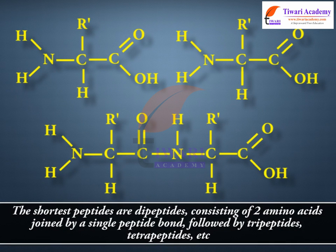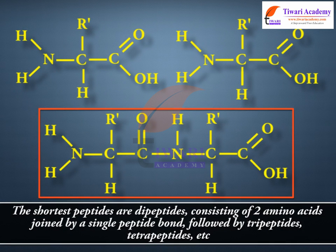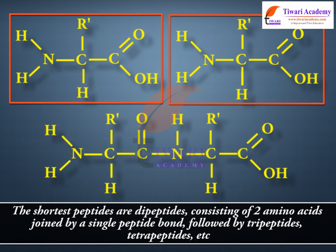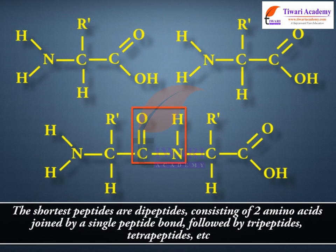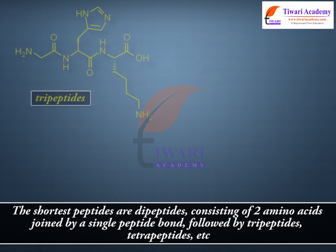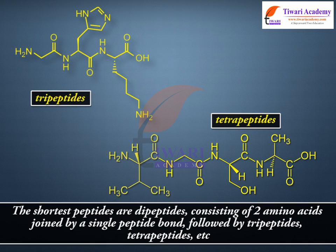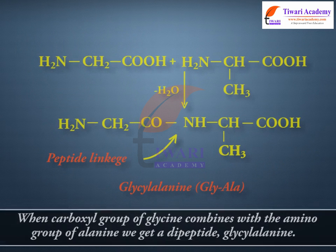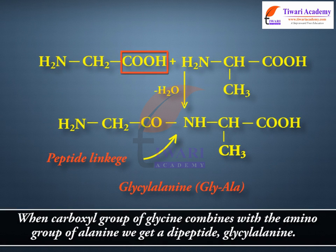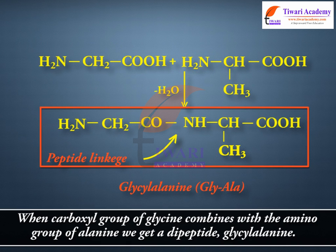The shortest peptides are dipeptides consisting of two amino acids joined by a single peptide bond, followed by tripeptides, tetrapeptides, etc. When the carboxyl group of glycine combines with the amino group of alanine, we get a dipeptide, glycylalanine.